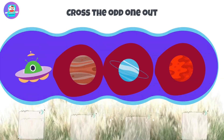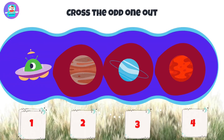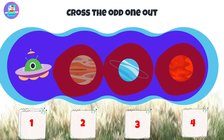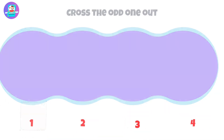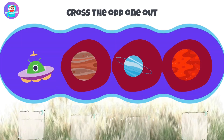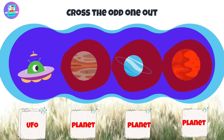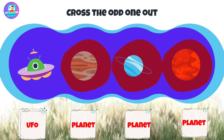Okay, let's check first. When we see here we have 3 planets and a UFO that is odd. So put a cross on this UFO.